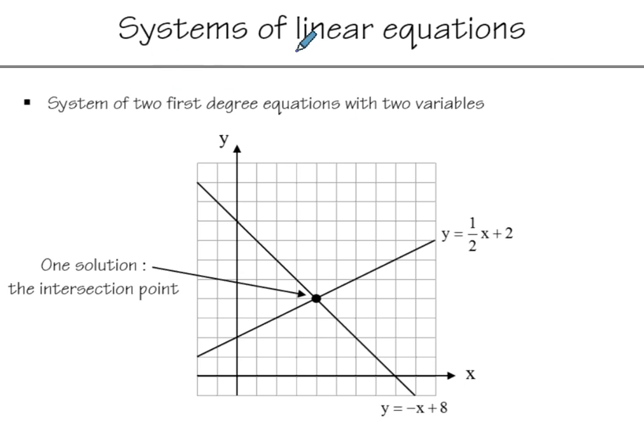So linear equations, it's a line. Remember, we talked about different linear equations. So it's going to be a straight line going up or down. And a system means that you have more than one. So this here is a system of two, because we have two lines.